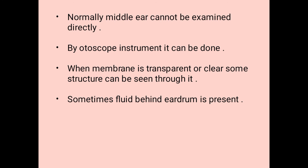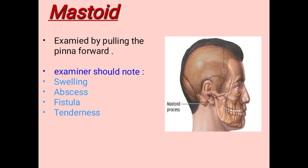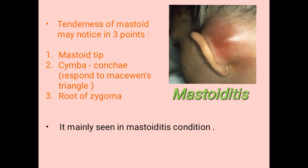Fluid in contact with infected bodies or foreign bodies can cause conditions such as acute and chronic suppurative otitis media. The mastoid process can be examined by pulling the pinna forward; the examiner should note swelling, abscess, fistula, and tenderness. Mastoid tenderness may be noted at three points: the mastoid tip, the suprameatal triangle (spine of Henle), and the root of the zygoma. It is examined by pressing in front of the tragus and is mainly seen in mastoiditis. This completes our physical examination.